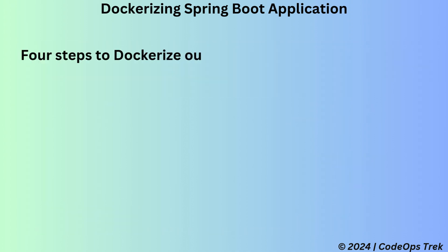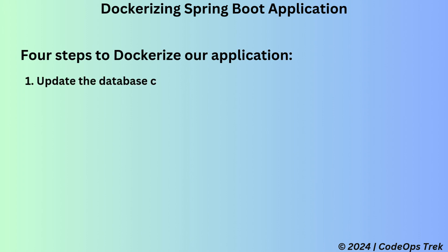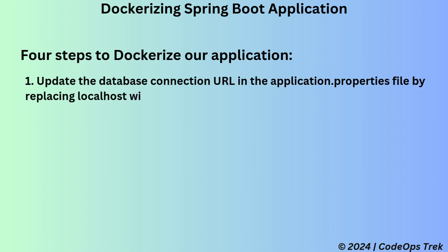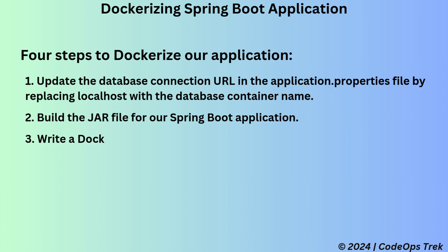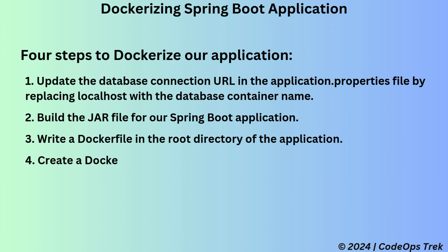So, here are the four steps to dockerize our application. First, update the database connection URL in the application.properties file by replacing localhost with the database container name. Second, we will build the jar file for our Spring Boot application. Third, we will create a Dockerfile in the root directory of the application. Finally, we will create a Docker image for the application. Let's start by dockerizing our application.